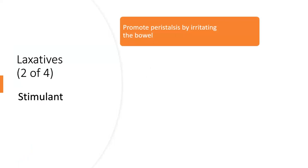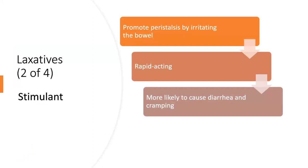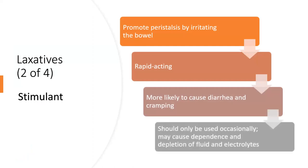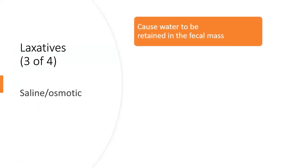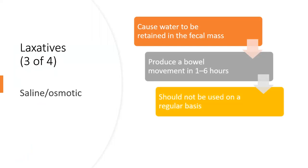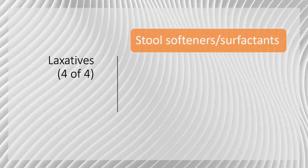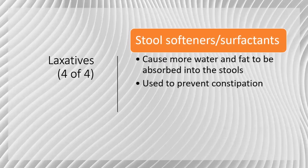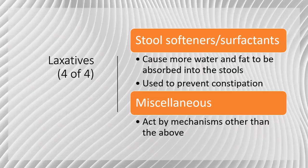Stimulant laxatives promote peristalsis by irritating the bowel. They are rapidly acting, more likely to cause diarrhea and cramping, and should only be used occasionally, as they may cause dependence and depletion of fluid and electrolytes. Saline and osmotic laxatives cause water to be retained in the fecal mass, produce a bowel movement in 1 to 6 hours, and should not be used on a regular basis. Stool softeners or surfactants cause more water and fat to be absorbed into the stools and are used to prevent constipation. Miscellaneous laxative drugs act by mechanisms other than the above.